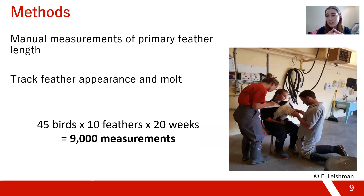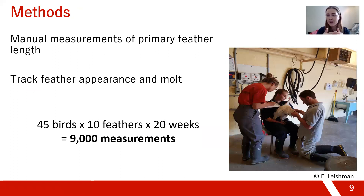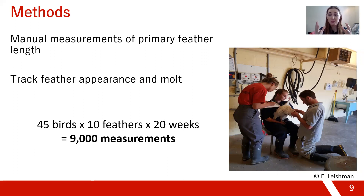The study design is relatively simple. We took manual measurements of primary feather length and tracked their appearance, when they stopped growing, and when they molted, at our research station — one person holding the turkey, one measuring the feathers, and one recording the data. Across 45 birds and 10 feathers over 20 weeks, we effectively have 9,000 measurements of turkey primary feathers, making it one of the more comprehensive assessments of turkey primary feather growth.